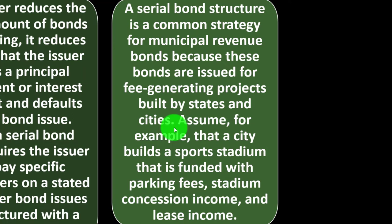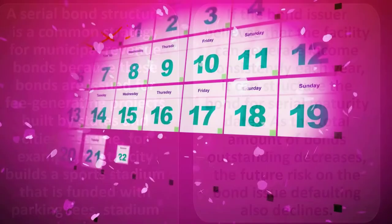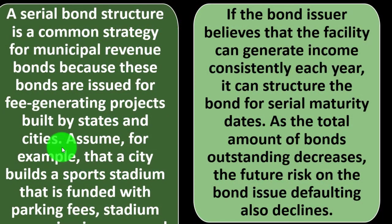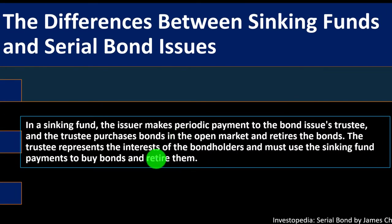For example, assume a city builds a sports stadium that is funded with parking fees, stadium concession income, and lease income. If the bond issuer believes that the facility can generate income consistently each year, it can structure the bond for serial maturity dates — those staggered dates of maturity. As the total amount of bonds outstanding decreases, the future risk of the bond issue defaulting also declines.